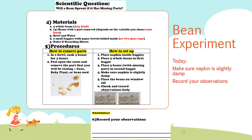You need to make sure that your napkin is slightly damp — a little bit wet. Make sure that the baggie is open and the napkin is a little bit wet. Then record your observations. If you see any growth starting to happen, put it down in your observations. If you have any questions about the experiment or the reading passage, please reach out to me. Thank you.